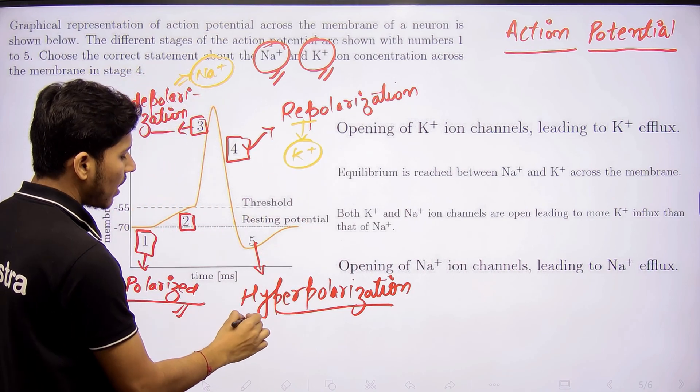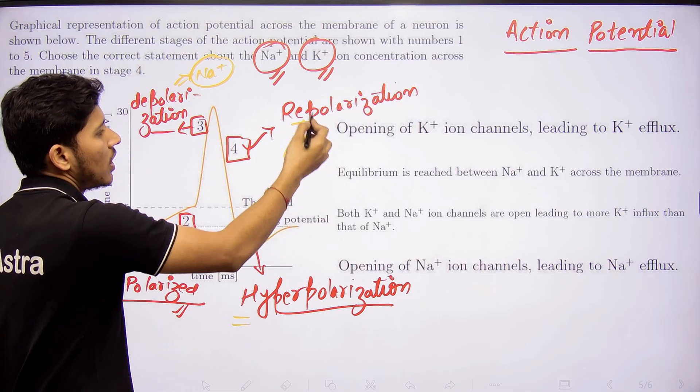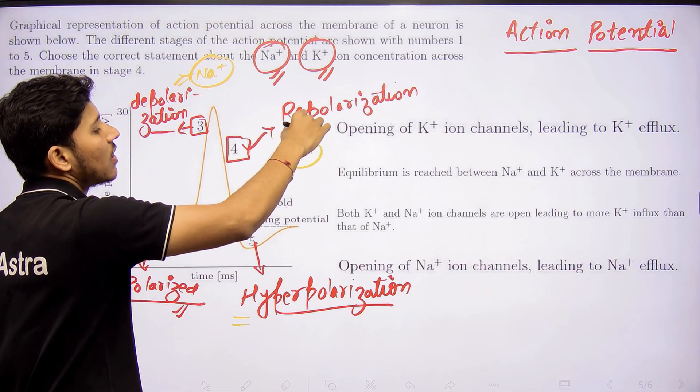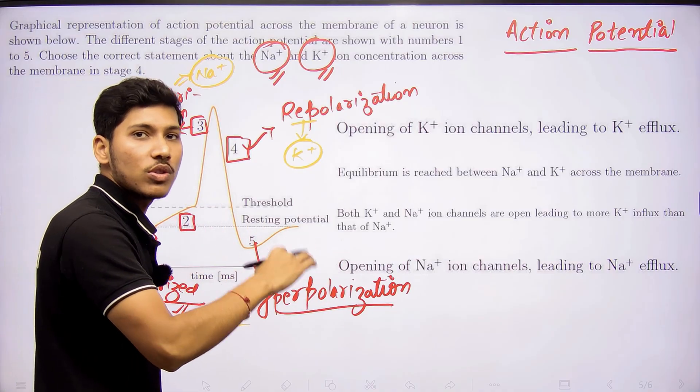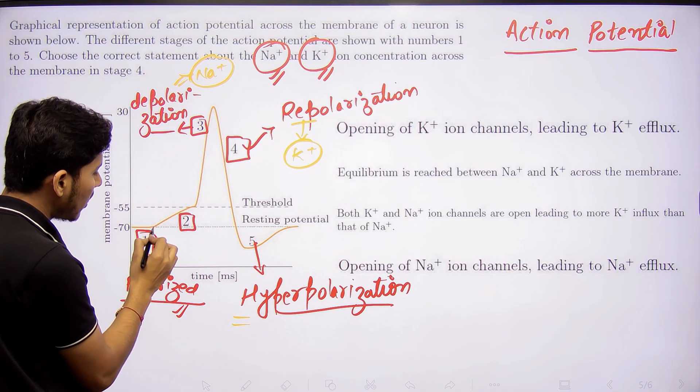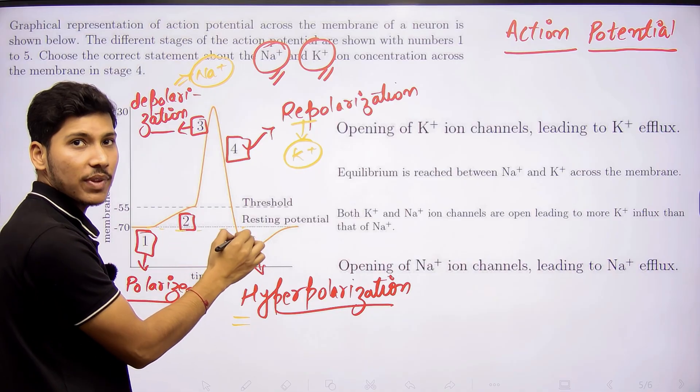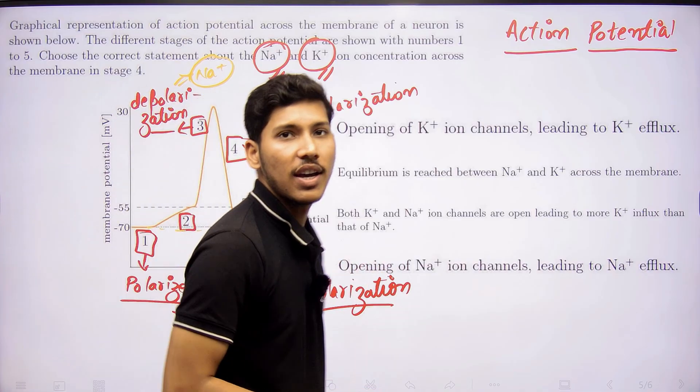And in hyperpolarization, these voltage-gated potassium ion channels keep on opening and do not close. That's why it goes beyond the normal state for some time, and after that it is restored again.